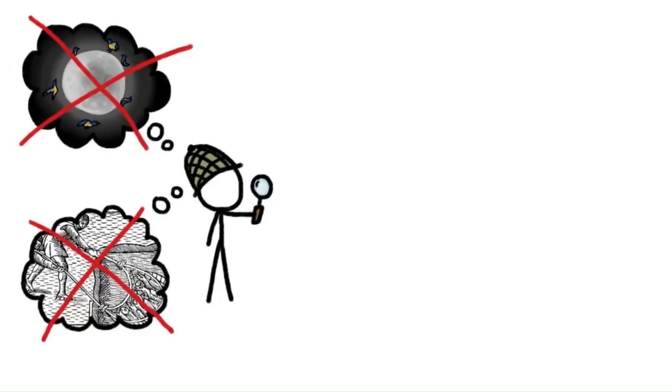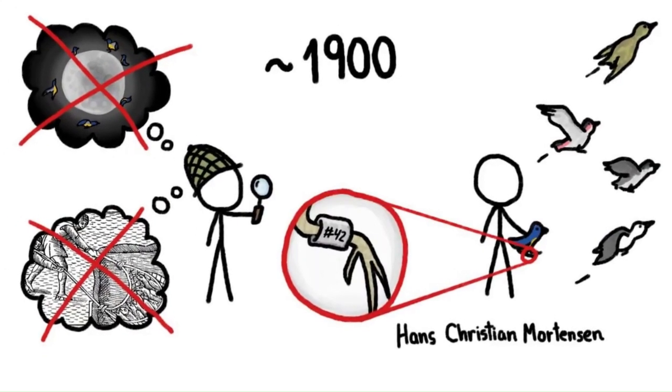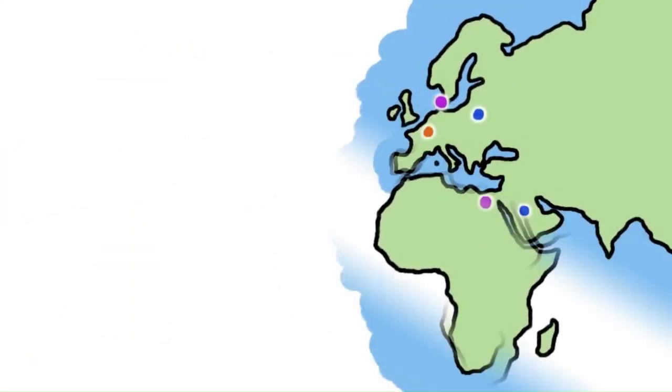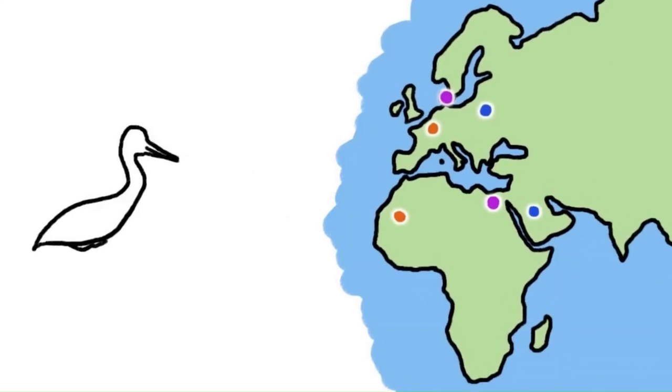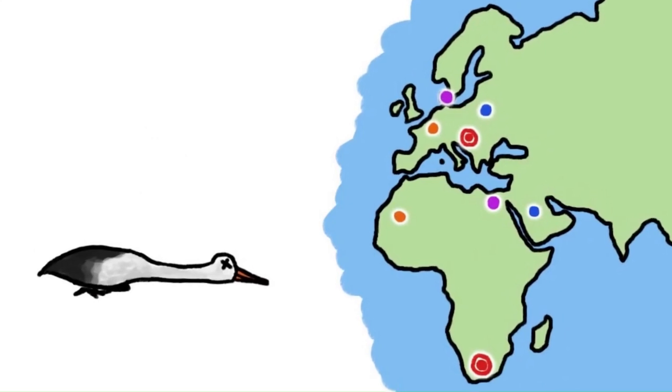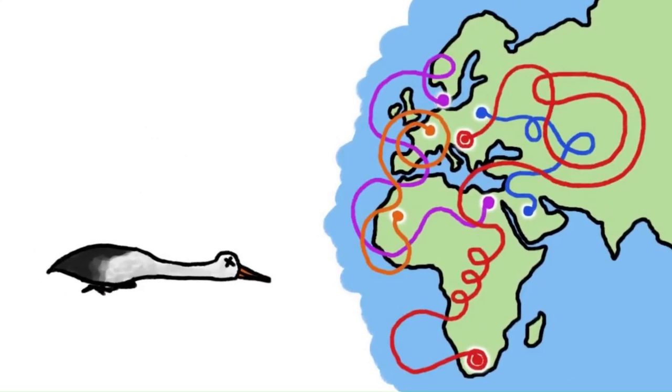The first real clues about where migratory birds actually go during the winter—hint, it's not the moon or the bottom of a frozen lake—came around 1900, thanks to a Danish teacher's technique of attaching marked aluminum rings to birds' legs and then re-releasing them. Each recapture or sighting of a banded bird put a dot on the map, and soon long-distance earthly migrations were confirmed when a white stork that had been banded in Hungary was found dead in South Africa.